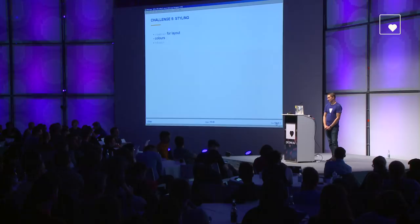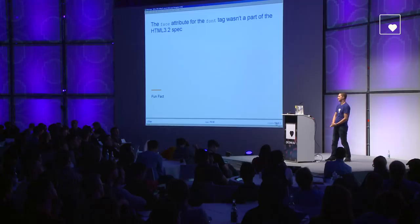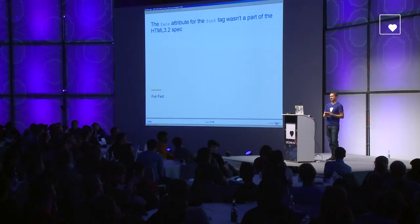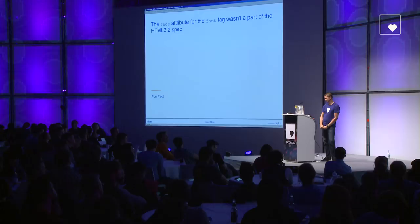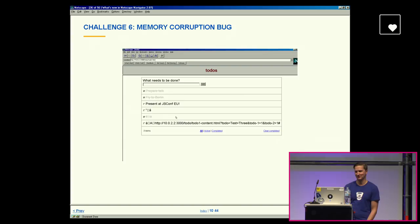One thing you couldn't set was the font face — the font face attribute wasn't actually part of the HTML 3.2 spec. Netscape didn't let you change the font, so the only reason you're not looking at Times New Roman right now is because I changed the default browser font to something more pleasant. The face attribute was something Microsoft actually added as a custom attribute initially in their browser. There were also a couple of quirks, like a memory corruption issue: if you rapidly click on items, you suddenly get memory leaks from outside your page, like the URL or a HTTP header appearing in the content.